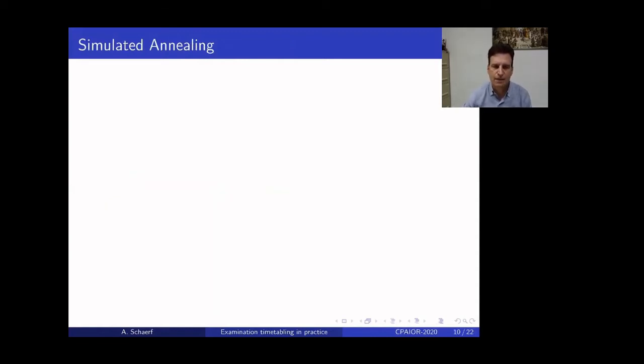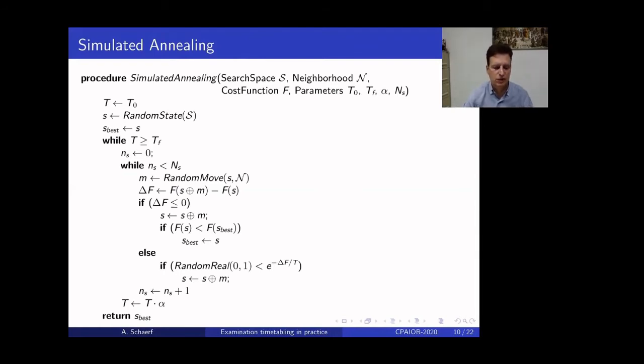Okay. So, we use simulated annealing. So, this is the classical version of simulated annealing, one you see in the original papers. So, we have geometric cooling and metropolis acceptance criterion, and so on. The only change that we make is that we use also what is called the cutoff mechanism, in which the temperature is lowered not only when it reaches a certain number of samples, but also when it reaches a certain number of accepted moves. Okay. So, this is the changes that we made from the standard version to accommodate this cutoff mechanism.